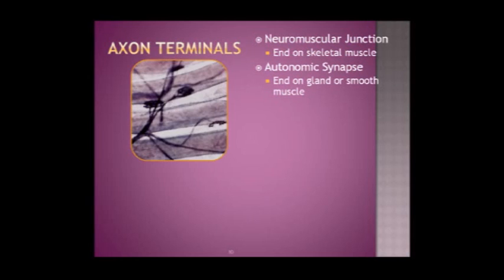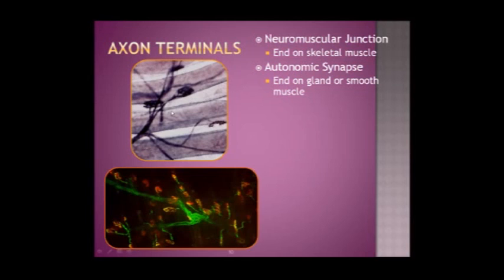We're going to look at a couple pictures of what axon terminals look like. These structures here are skeletal muscles, and this black structure is an axon branching off. These areas are called terminal buttons, and that's where the synapse is. We're going to take a closer look at that. This is just a different way of looking at the same thing. We have the axons stained in green and these terminal buttons stained in orange. In the background, you can see the skeletal muscle.